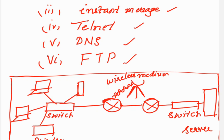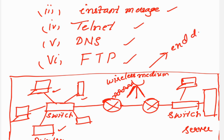In this diagram, one side of the network shows different end devices: printer, mobile phone, PC, and laptop. The other side shows a server and PC. In between, routers are connected with a cell phone tower using wireless medium. The diagram consists of end devices, intermediate devices like routers and switches, and both wired and wireless media.